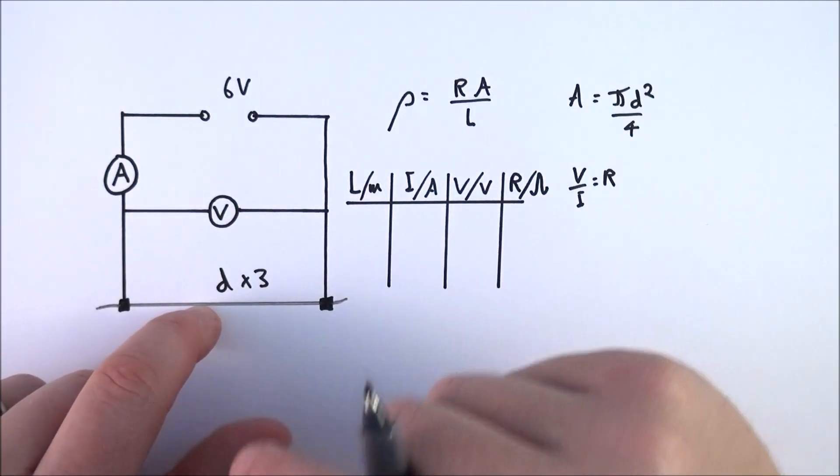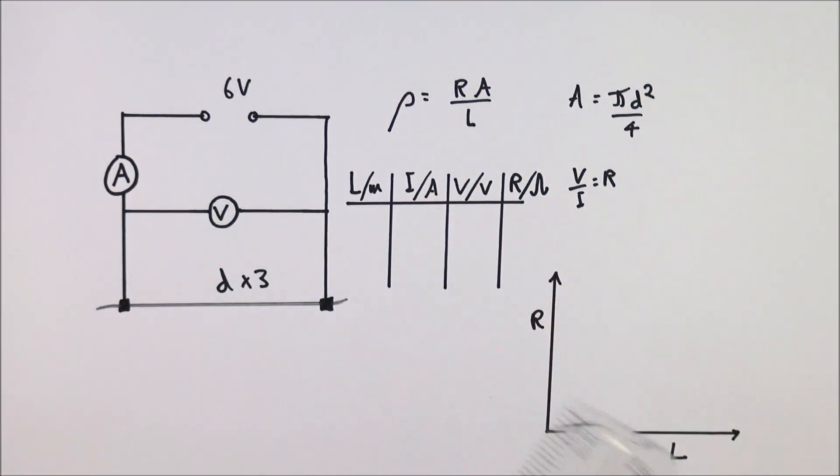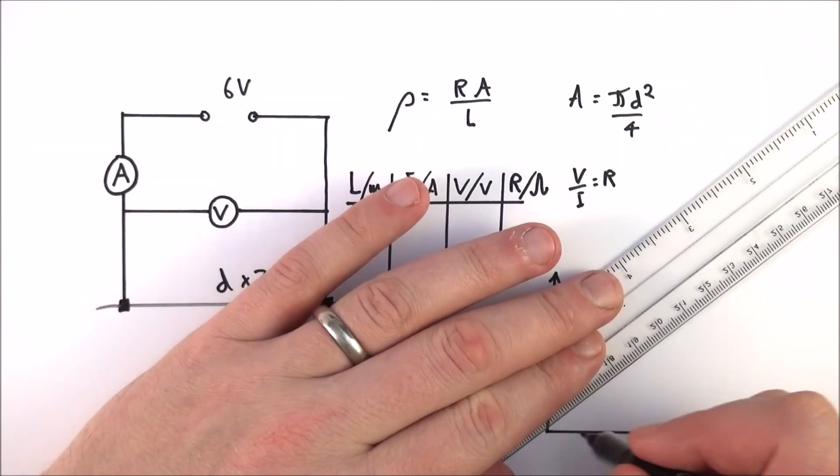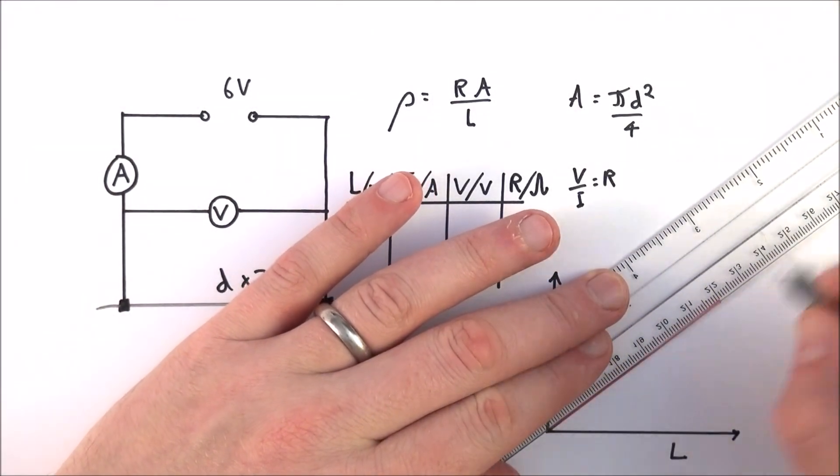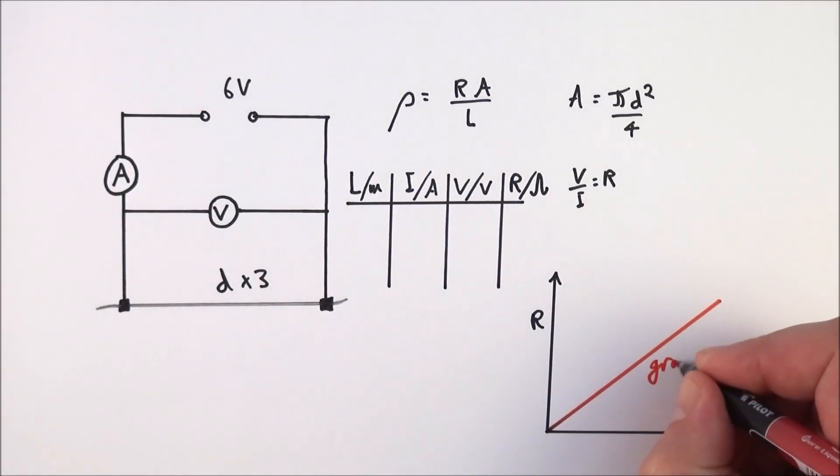What you can then do is plot a graph of L against R. Here we have a graph of R and L, and it shouldn't come as any surprise that when you have a longer piece of wire, the resistance is going to increase.